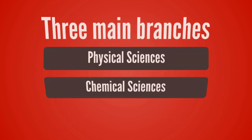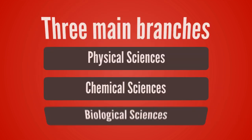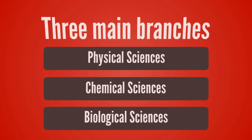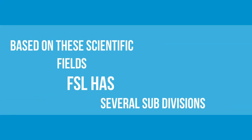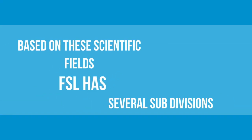Typically, there are three main branches of forensic science: physical sciences, chemical sciences, and biological sciences. Based on these scientific fields, a forensic science laboratory has several subdivisions.